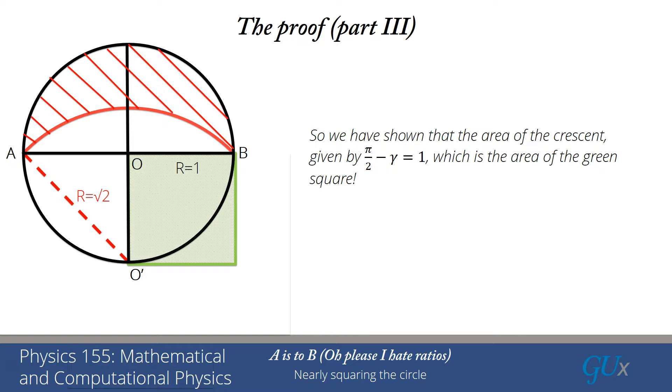So this proof itself is an intriguing proof, and it really hints that it might be possible to square the circle. And this is, I think, the reason why the Greeks spent so much time trying to figure out whether or not they could do it, but it turns out that you actually can't do it.